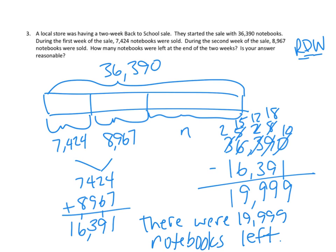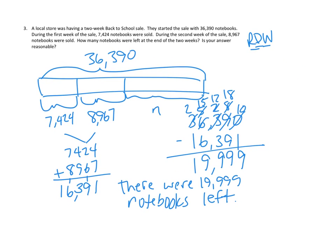Is our answer reasonable? I like to round some of these numbers. I'm going to estimate to the nearest thousand to see if that works. Our whole was 36,390 — is it closer to 36,000 or 37,000? Three hundred ninety is lower, so the whole rounds to 36,000. Then for the number we sold across two weeks — 16,391 — it's either 16,000 or 17,000. The next smaller unit is a low number, three, so that rounds to 16,000.